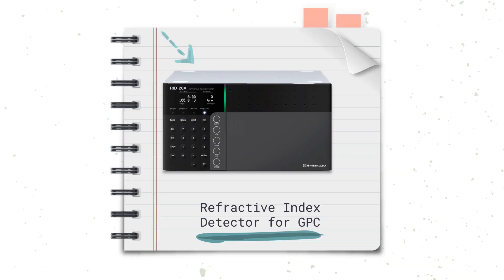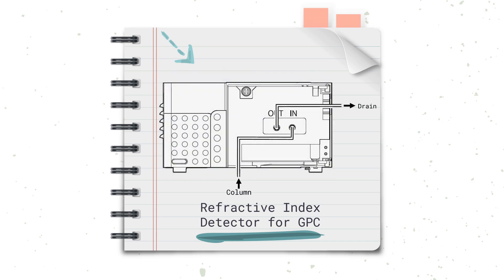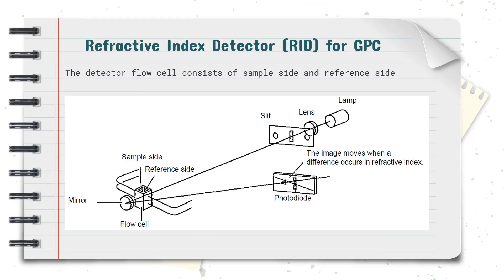The second component of GPC is the detector. One of the most commonly used detectors is the refractive index detector, or RID for short, and it's used to detect analytes when they elute out of the GPC column. The RID contains a flow cell made up of the sample and reference side, both of which contain the mobile phase. A light beam from the lamp inside the RID passes through both sides of the flow cell before being reflected on a mirror, creating an image on the photodiode.